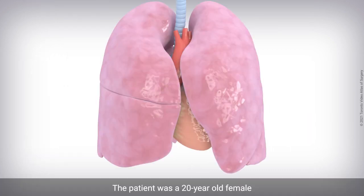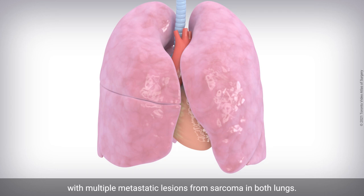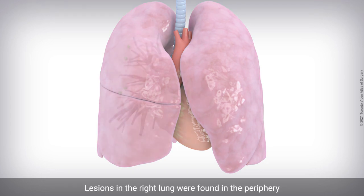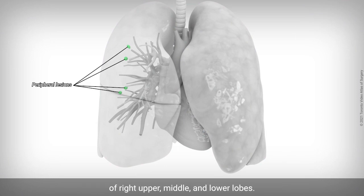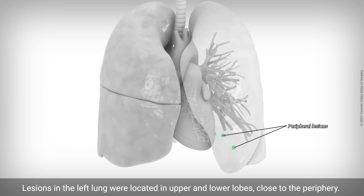The patient was a 20-year-old female with multiple metastatic lesions from sarcoma in both lungs. Lesions in the right lung were found in the periphery of the right upper, middle, and lower lobes. Lesions in the left lung were located in the upper and lower lobes, close to the periphery.